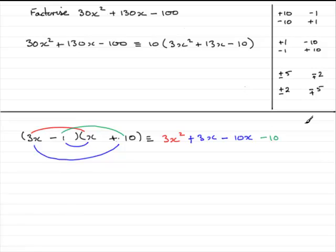So what have we got now? We've still got minus 1 times 10 which is minus 10. But the x terms: we've got 3x times plus 10 which is plus 30x, and minus 1 times x which is minus 1x. And we've now got 29x, not the 13x that we wanted. Switching the signs would only give us minus 29x, so that won't be worthwhile doing.